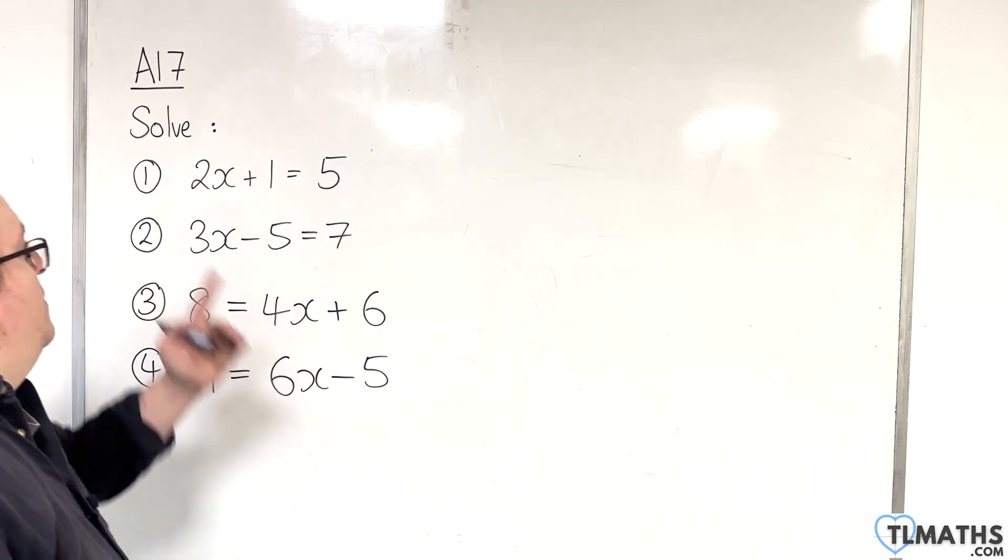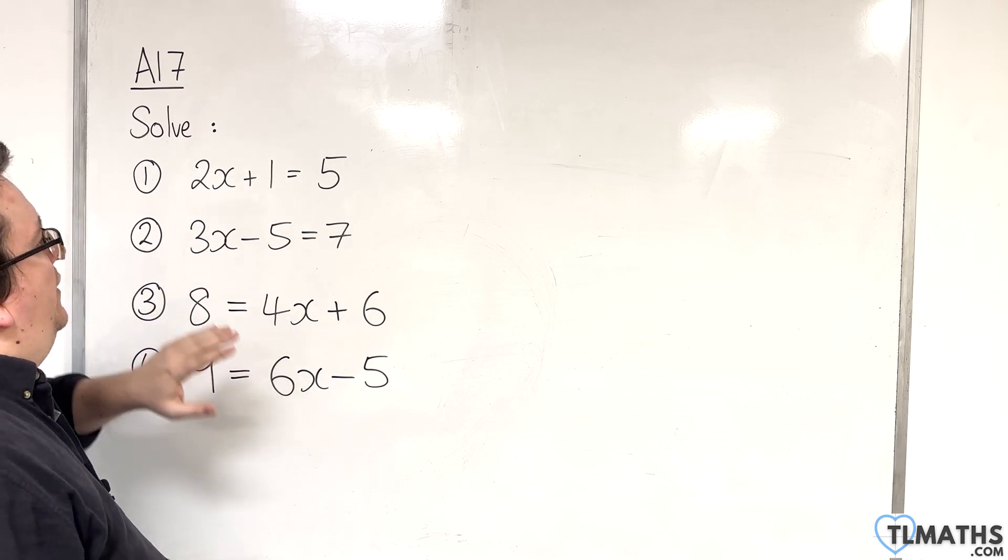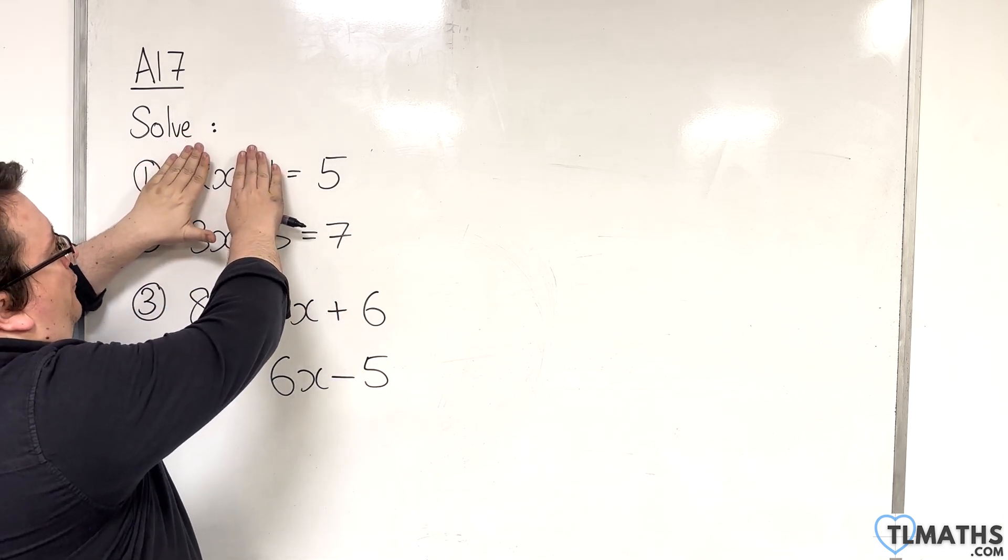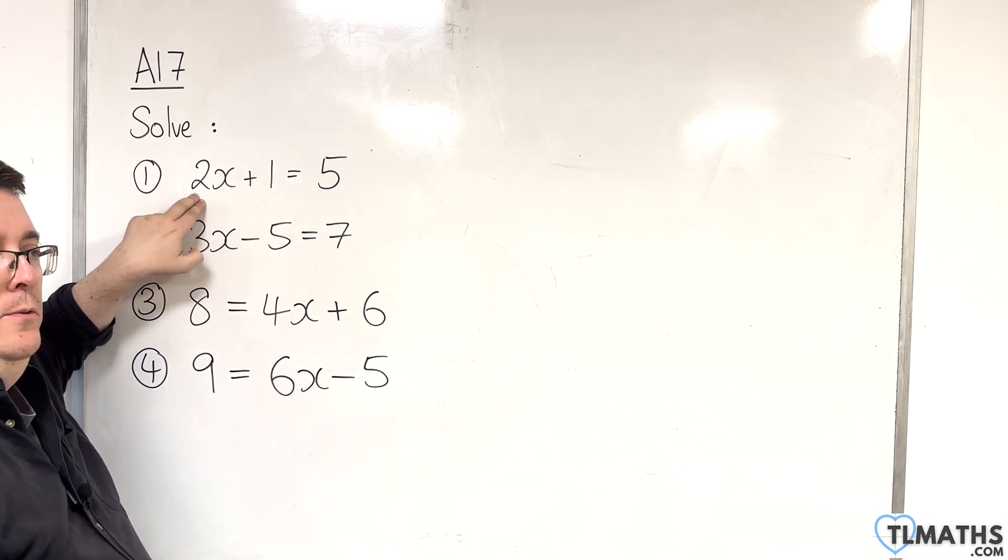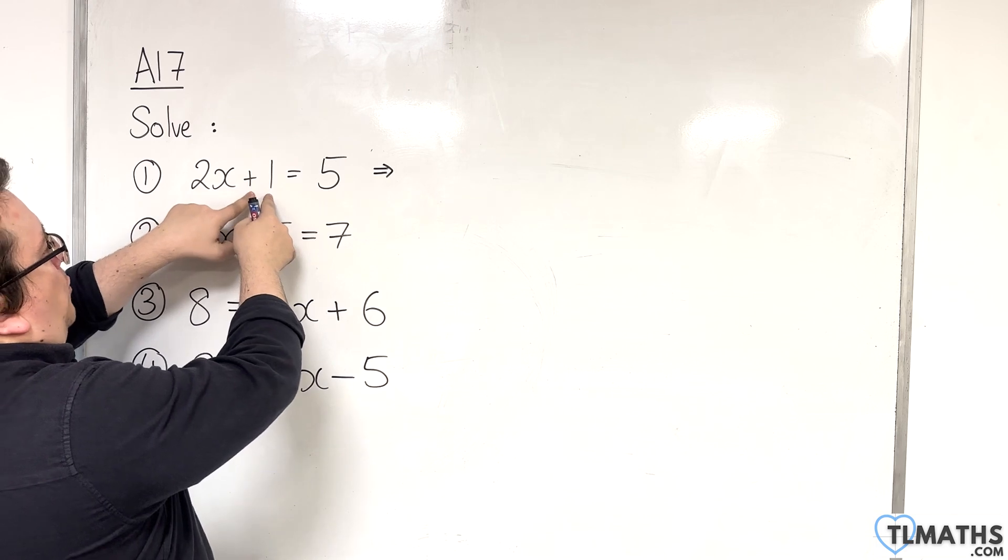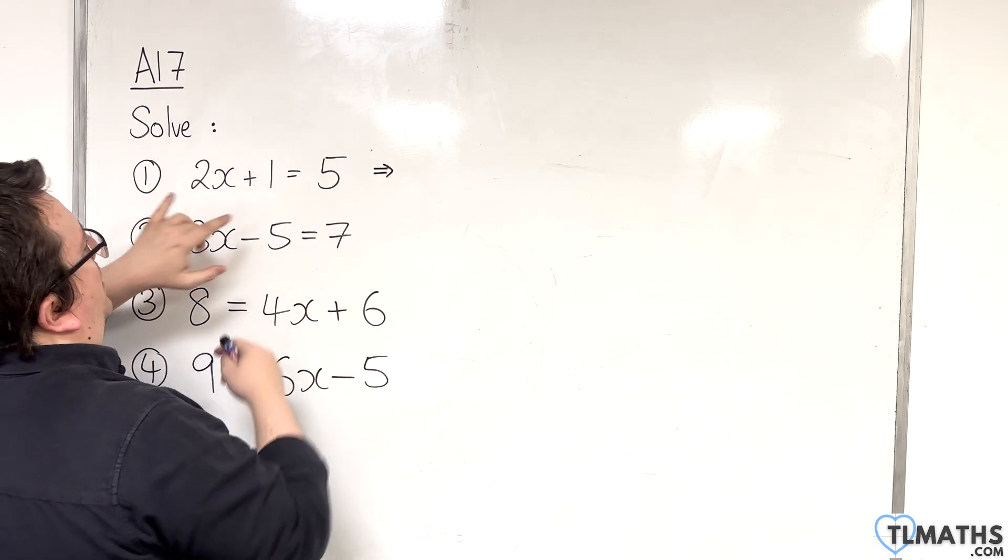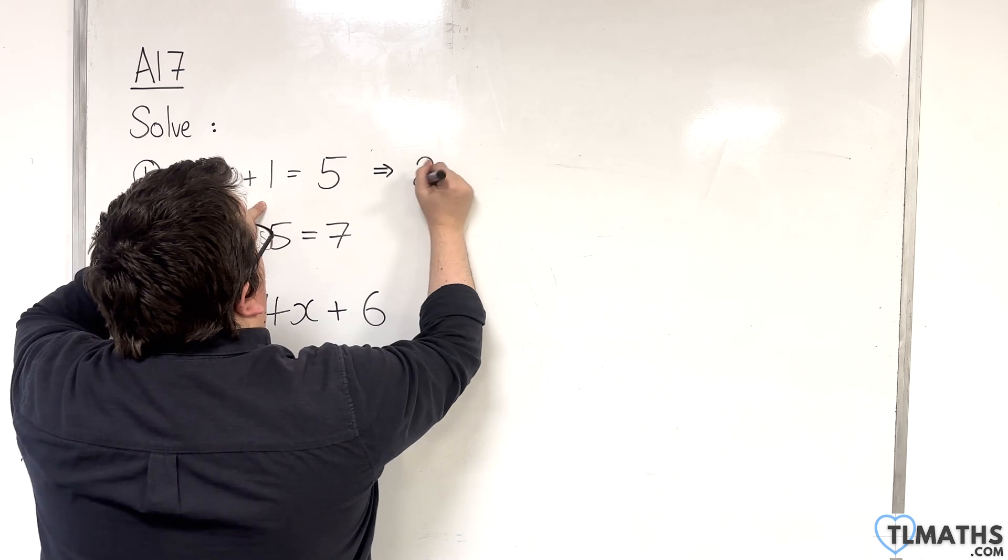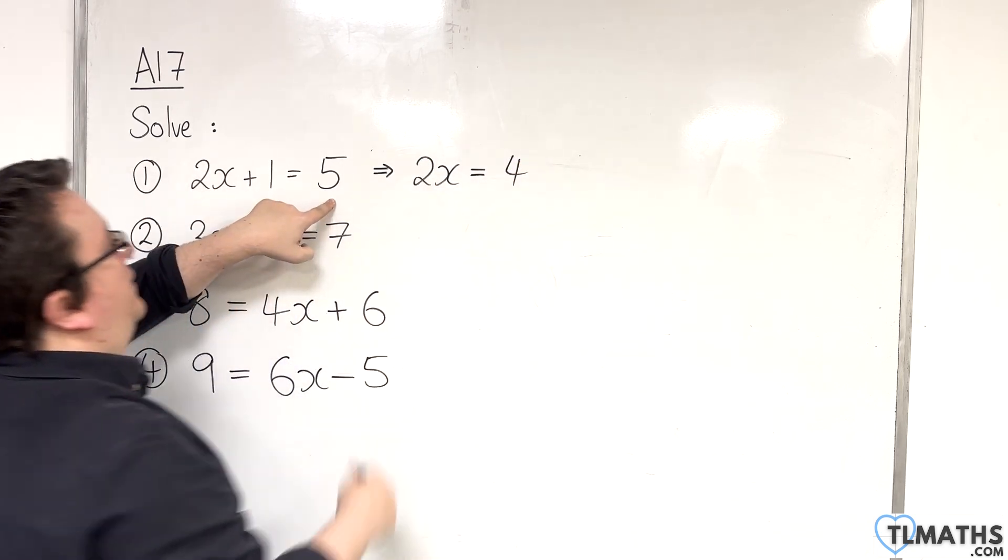So, with number 1, 2x plus 1 equals 5, in order to isolate the x, to get the x by itself, we've got to deal with both the plus 1 and the multiply by 2. So, we're going to deal with the addition first, the plus 1, and in order to get rid of that, I need to subtract 1 from both sides. So, the left-hand side becomes 2x, the right-hand side becomes 4. 5 take away 1 is 4.